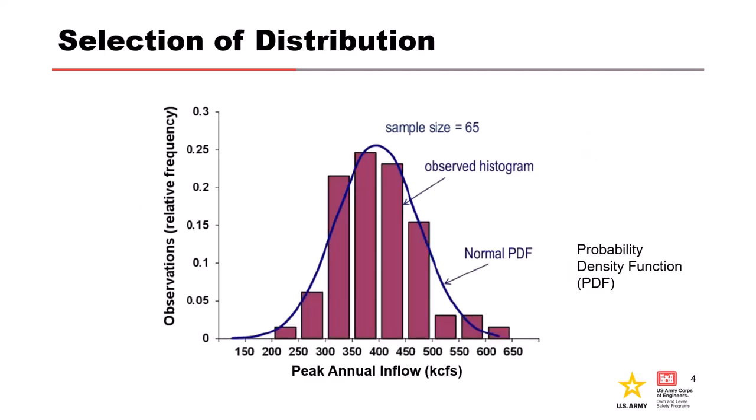So we're going to look at a different example and how we would select a distribution. So this is a histogram of a 65 year period of peak annual inflows. And by examining the histogram as our first step, we can decide what distribution might be reasonable to represent this data. It's not completely symmetrical. If we look at it,